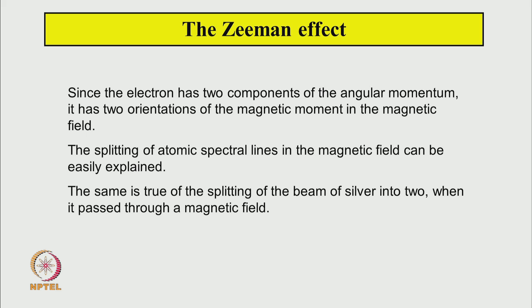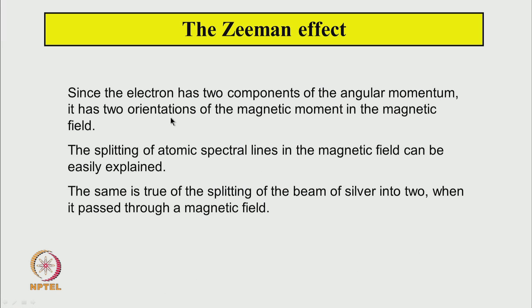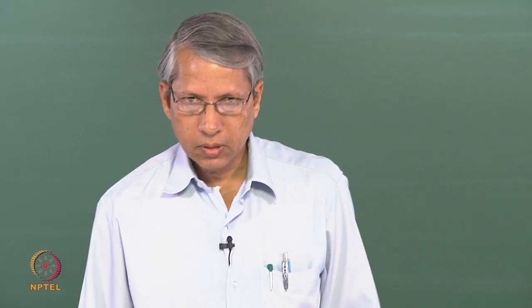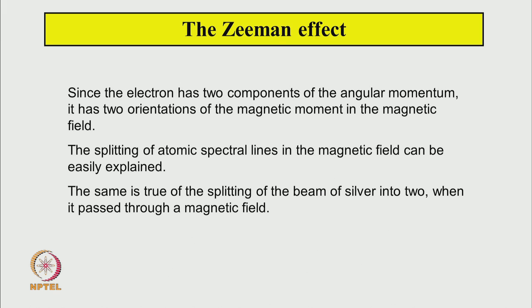The Zeeman effect — the splitting of spectral lines in the presence of a magnetic field — can also now be very easily explained by the two possible orientations of the magnetic moment in the magnetic field. The same is true in the case of the Stern-Gerlach experiment where the silver atom beam splits into two, with origin again being that spin angular momentum takes two values, plus half and minus half, giving two components of magnetic moment.